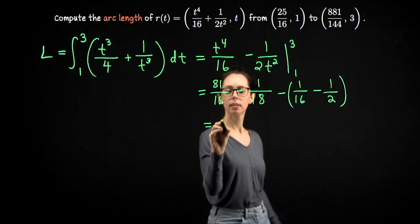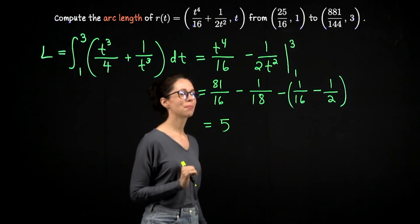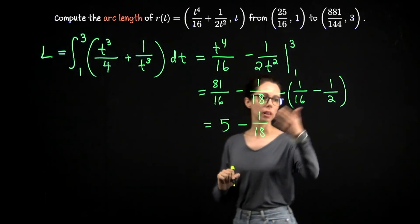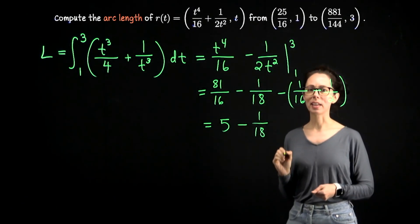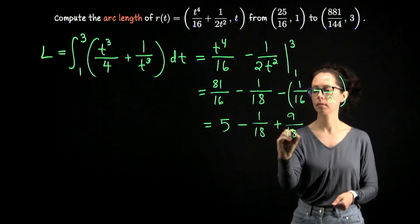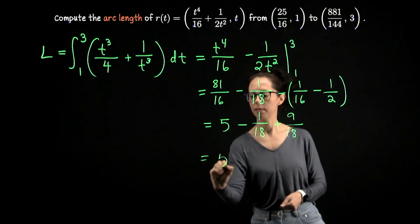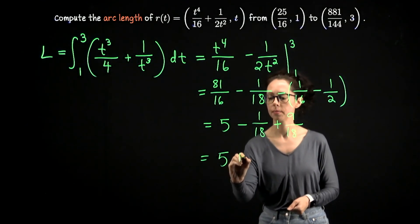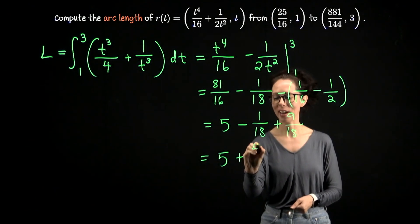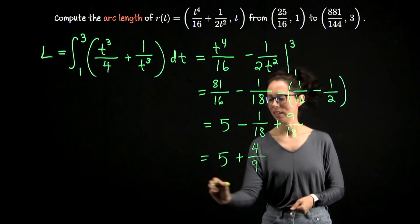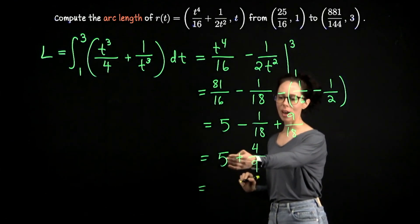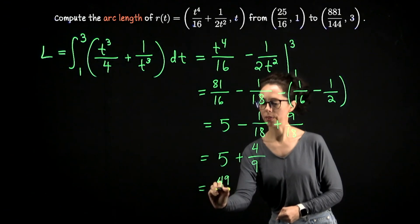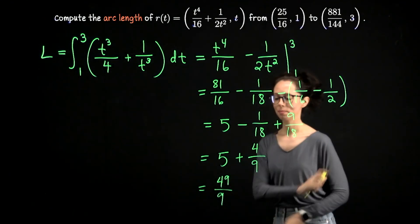It's five. So these two together give us five. And then we have minus one over 18 plus one half. Let me write that as plus nine over 18. So that we get five plus eight over 18, which is four over nine. And that looks totally fine to me, but five times nine is 45. So if you'd like, you could write this as 49 over nine.